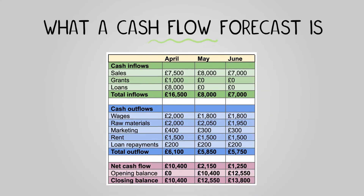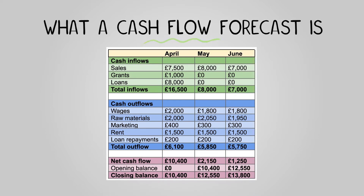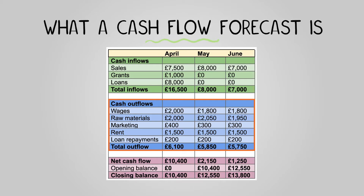The elements of a cash flow forecast include predicted inflows — the money you expect to come into the business — and predicted outflows — the money you expect to go out of the business. Net cash flow is calculated by subtracting the total predicted outflows from the total predicted inflows.